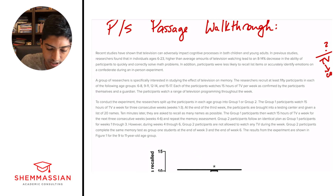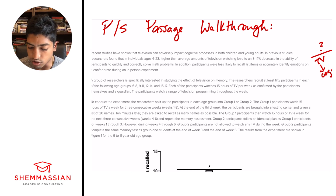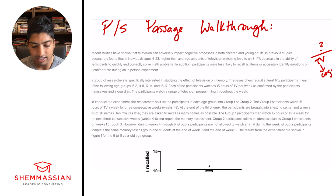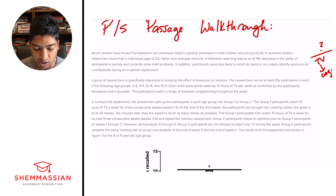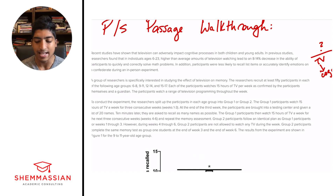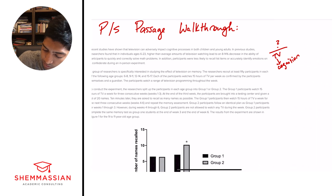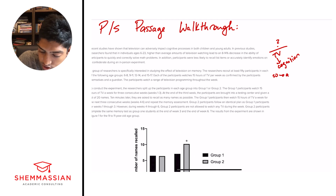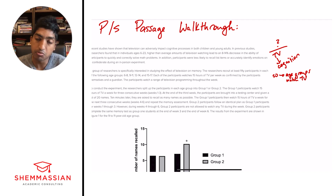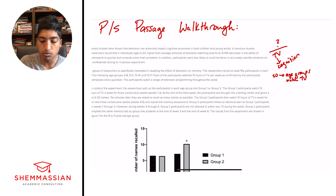A group of researchers is specifically interested in studying the effect of television on memory. The researchers recruit at least 50 participants in each of the following age groups: 6 to 8, 9 to 11, 12 to 14, and 15 to 17. Each of the participants watches 15 hours of TV per week, as confirmed by the participants themselves and a guardian. The participants watch a range of television programming throughout the week. So what's happening here? Researchers are looking at 50 participants in age groups watching TV — we're starting an experimental setup focused on television, memory, and age groups.